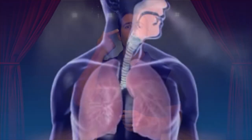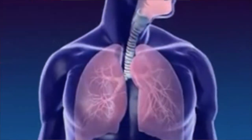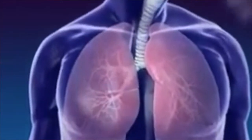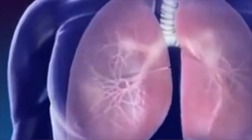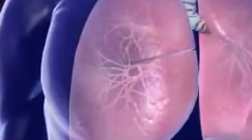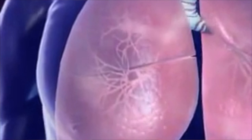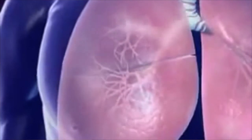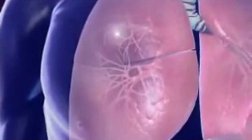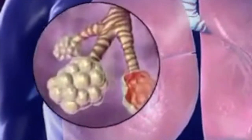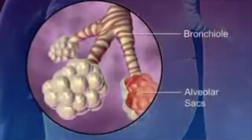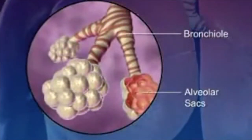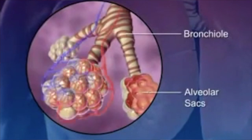As you breathe in, air comes through your nose or through your mouth and it goes down your windpipe, or your trachea, all the way down into your lungs. Then little individual pockets within your lungs called your alveoli sacs fill up, and that is what gives you oxygen.